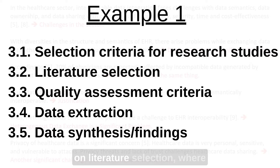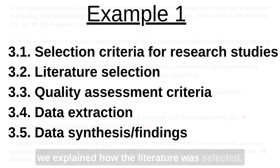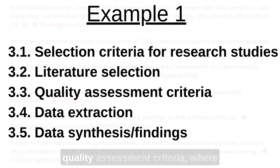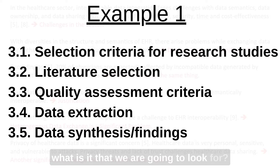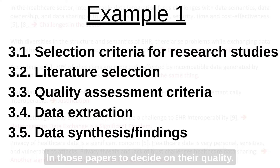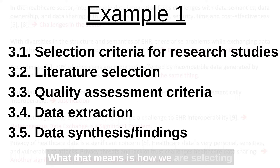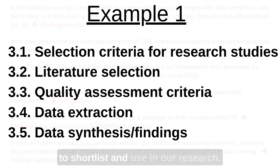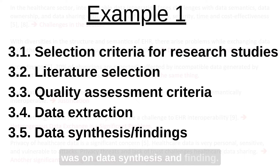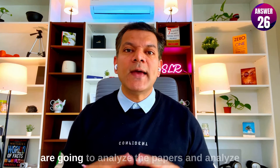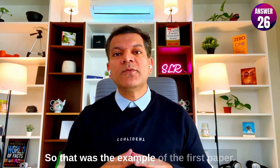The second section was on literature selection, explaining how the literature was selected. The third section was on quality assessment criteria — once we have screened the papers, what we look for to decide on their quality. Section 3.4 explained data extraction: how we select information from each paper we shortlist. Finally, section 3.5 was on data synthesis and findings, explaining how we analyze the papers and report the results.